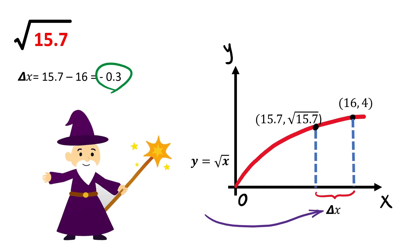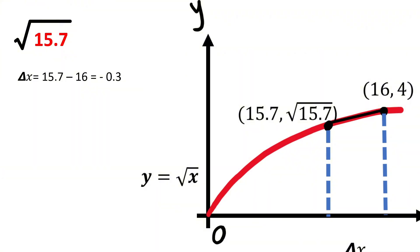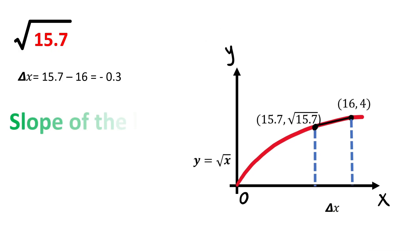Now, here comes the real magic. For very small changes, we can approximate this curve as a straight line, right? So what will be the value of the slope of this line for the two points?